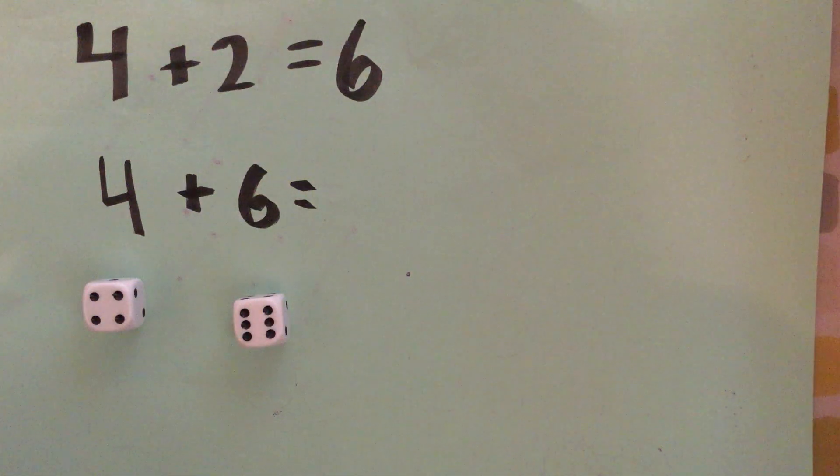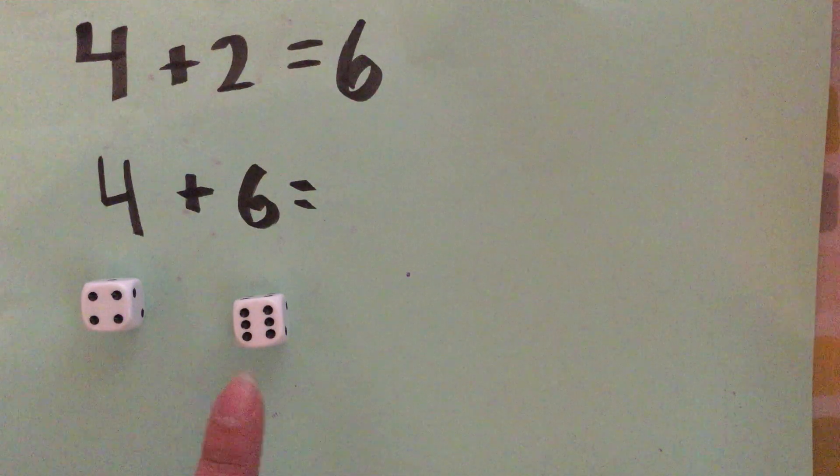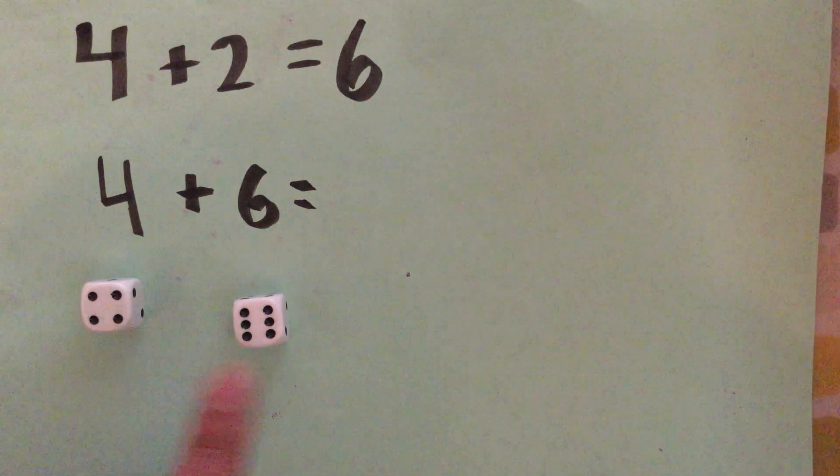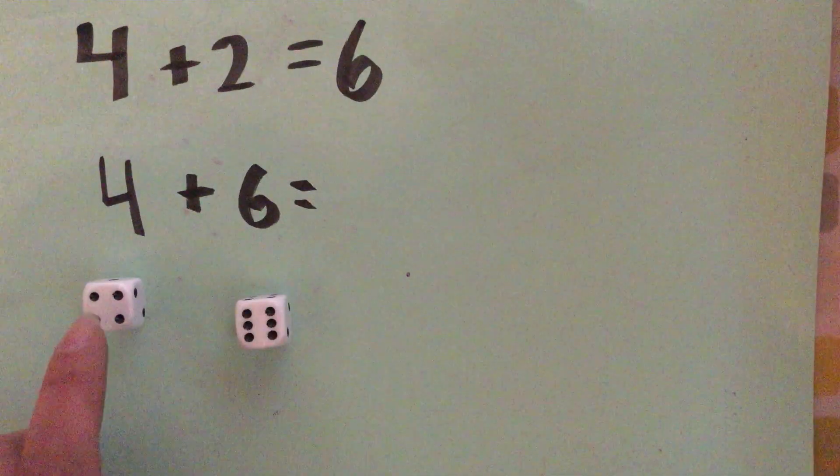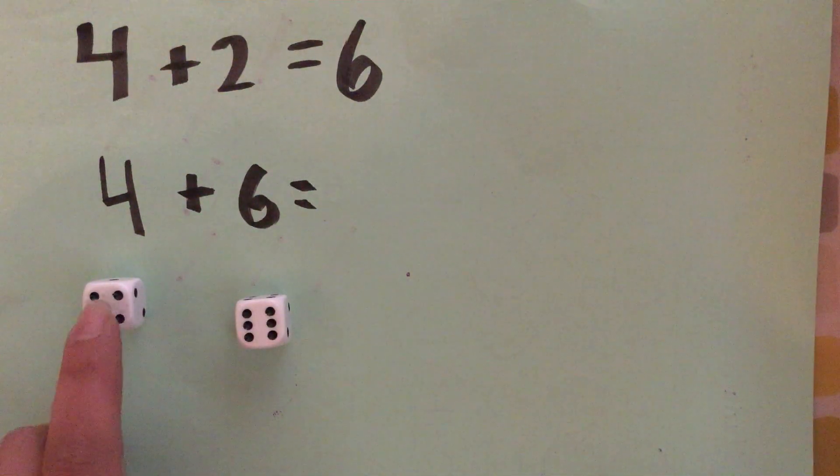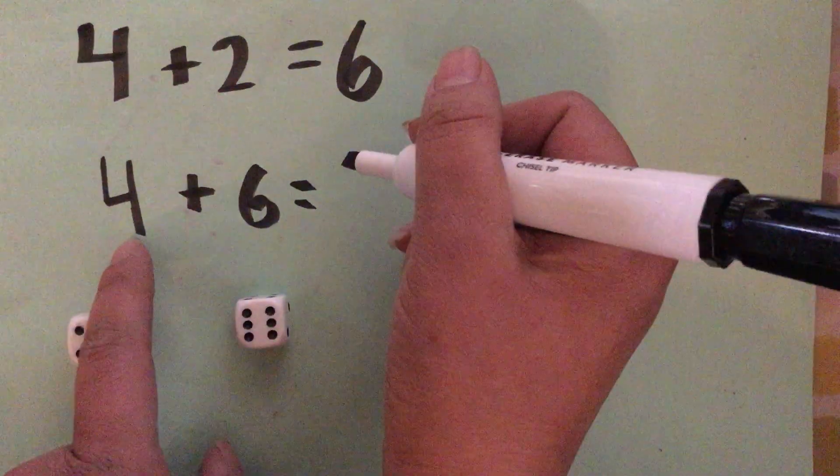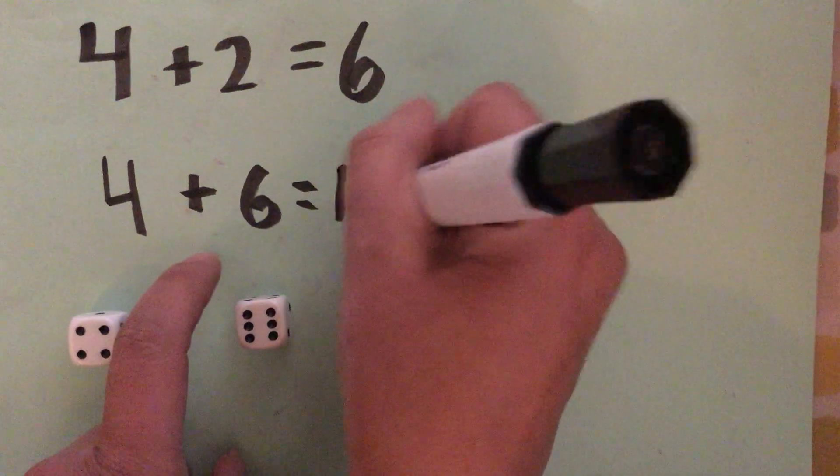One strategy for adding is to count on with the biggest number. Which number is biggest? You got it, six. So I'm gonna say six, seven, eight, nine, ten. Four plus six equals ten.